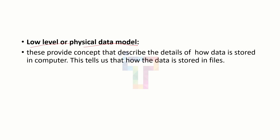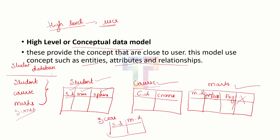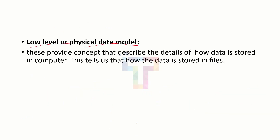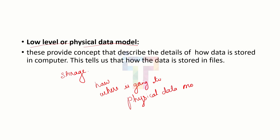Next we have low level or physical data model. These data models describe the details of how the data is stored in a computer or files. As a user, we have described these tables — student, course, marks, and score — but we are not concerned about where they are going to be stored. Physical data model concentrates on the storage of the database: how it is going to be stored and where.